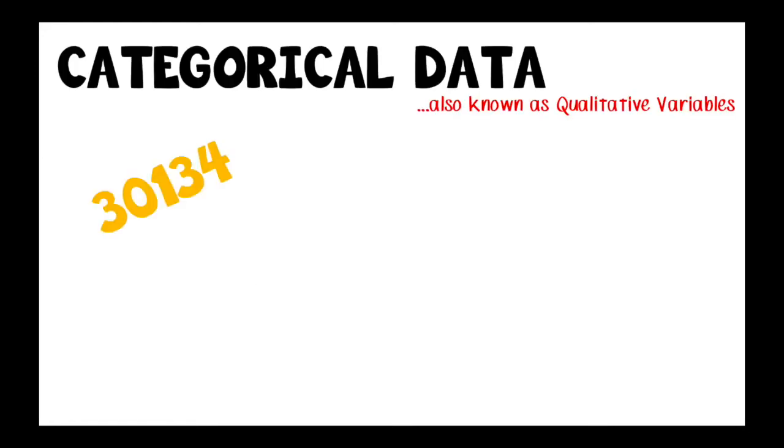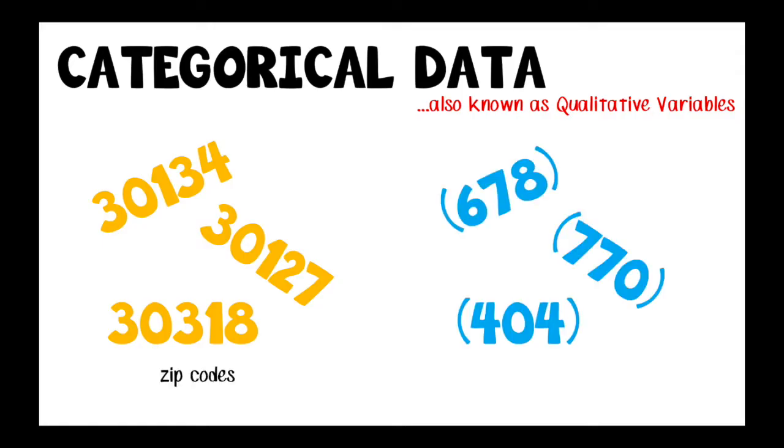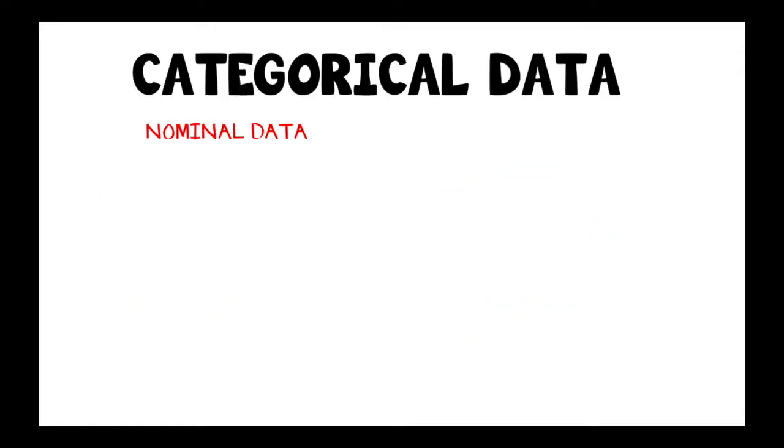Categorical data, or qualitative variables, identifies group membership. Categorical data consists of information such as zip codes and telephone numbers and can be divided into nominal and ordinal.